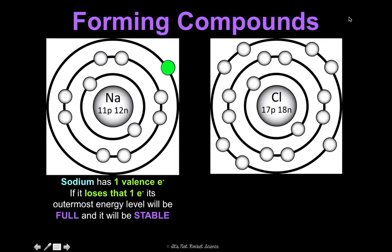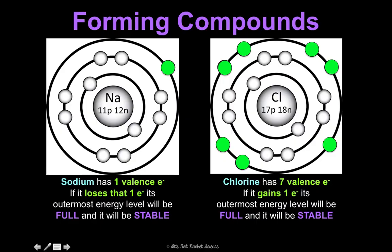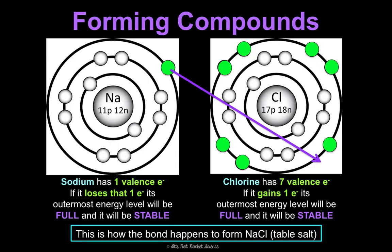Look at chlorine's outer energy level — it has seven valence electrons. We can either lose seven to be stable or gain one. It's going to be easier to gain one. So if chlorine gains one electron, its outermost energy level will be full and it'll be considered stable. This is why the bond forms between sodium and chlorine: sodium will naturally give up its one valence electron to chlorine, which gains one, making both of them stable. This is how the bond forms between NaCl — table salt.